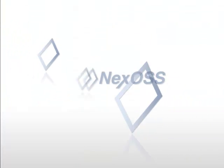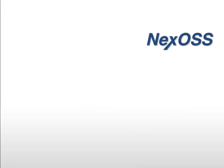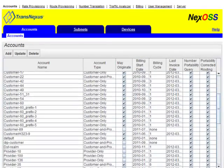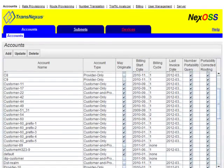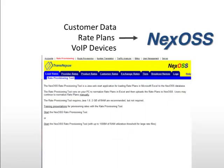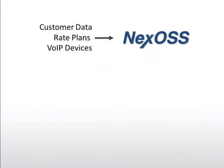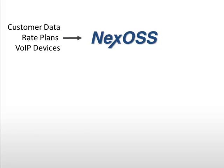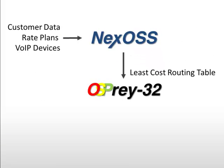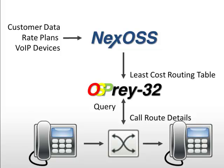NexOSS solves this problem with dynamic Least Cost Routing. With NexOSS, you upload your customer and provider rates, plus the VoIP devices or trunk groups of your customers and providers. NexOSS creates an optimized Least Cost Routing Table for millions of provider routes in just moments, and pushes it to the Osprey Routing Server. When calls come in, your Switch or SBC simply queries the Osprey Routing Server for the call route details, and completes the call using the lowest cost or best route.